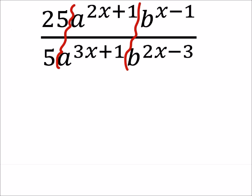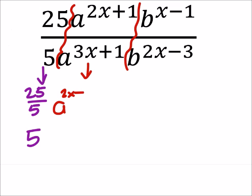This is nice because right here we've got 25 divided by 5 which is 5. And then with the a's, I'd have a to the power of 2x plus 1, but I'd be subtracting that 3x plus 1 right there.